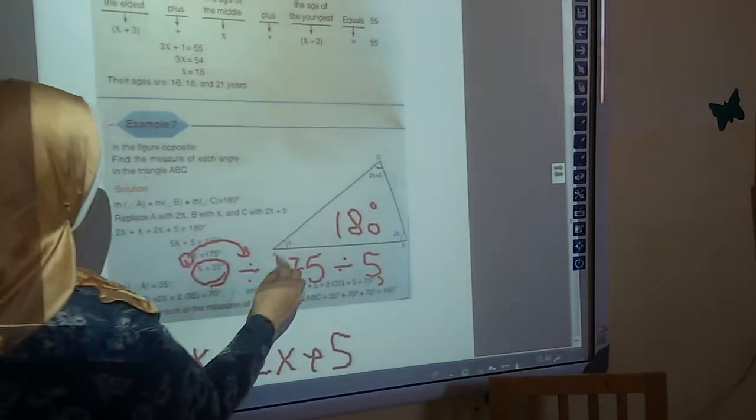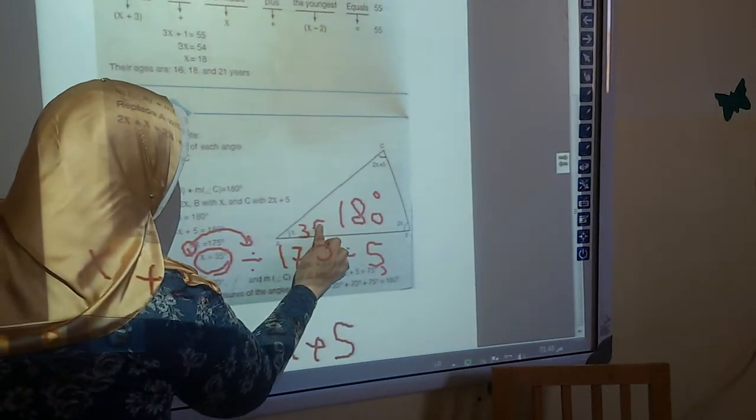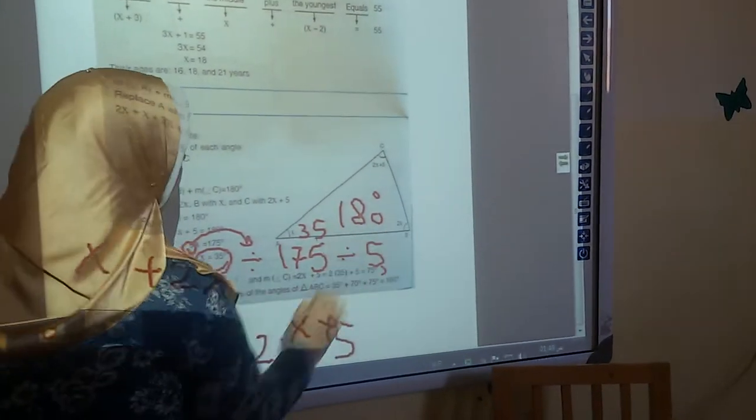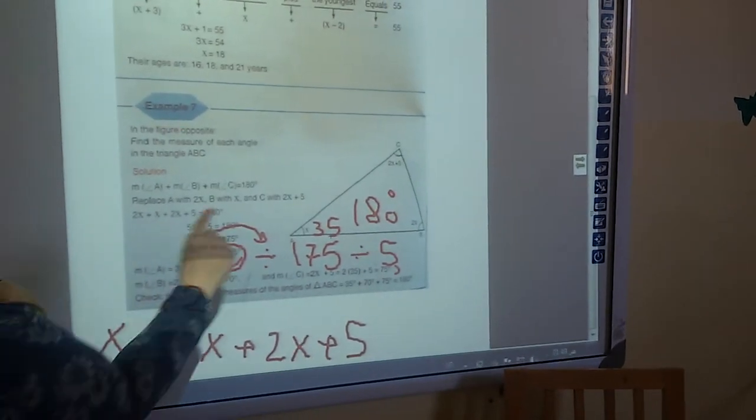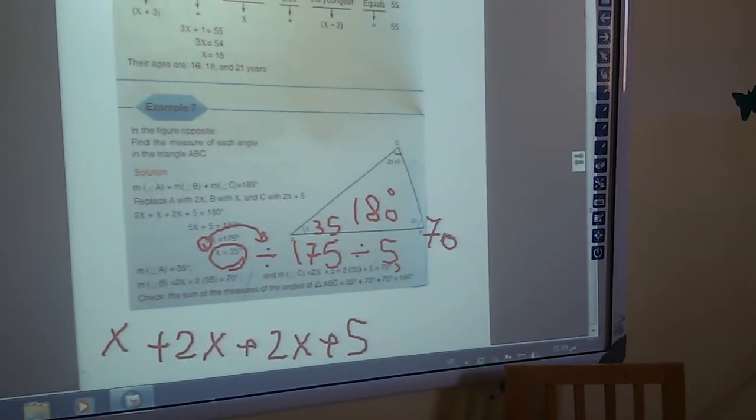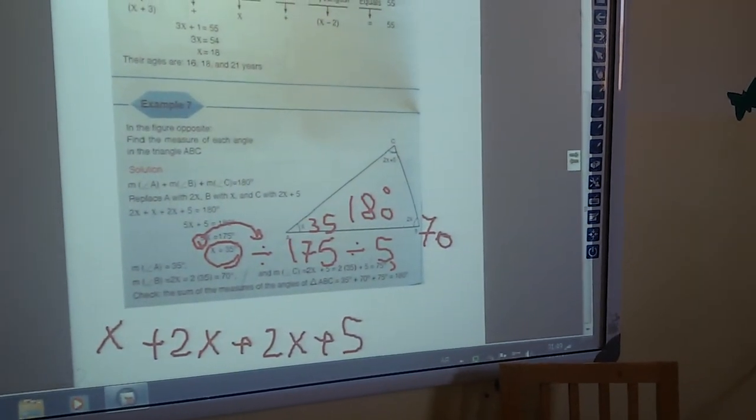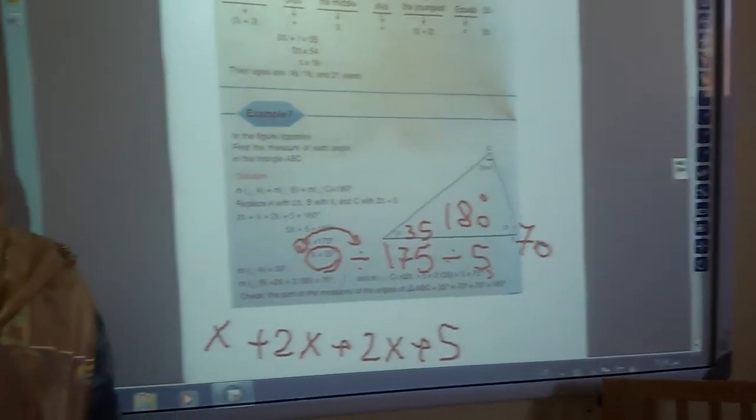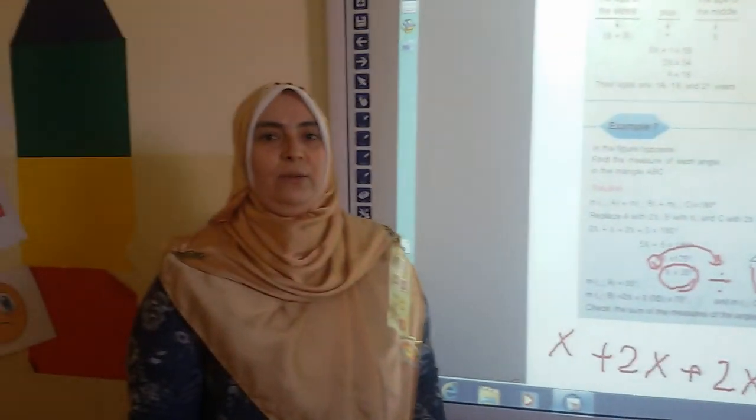So this one is 35 because it's x. And this? 2 times 35. 2 times 35 is 70. And you can get angle C. Thank you very much. See you next session. See you later.